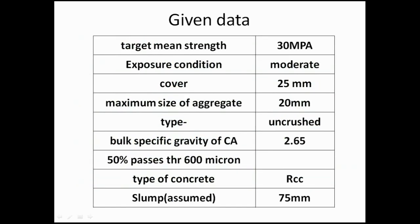In the slide I have given the data from the numerical. Target mean strength is directly given as 30 MPa, so we need not calculate it. Exposure condition is moderate, cover is 25 mm, maximum size of aggregate is 20 mm, type of aggregate is uncrushed, bulk specific gravity of coarse aggregate is 2.65, and 50% passes through the 600 micron sieve. Type of structure is RCC. The slump value was not given, so we have assumed it as 75 mm.